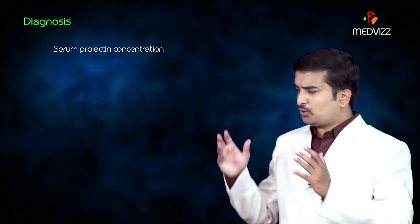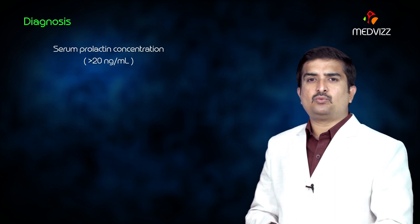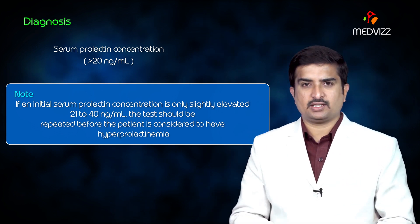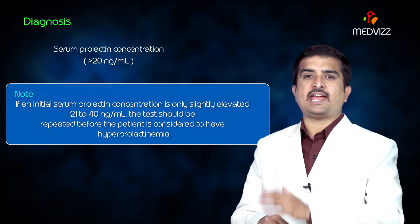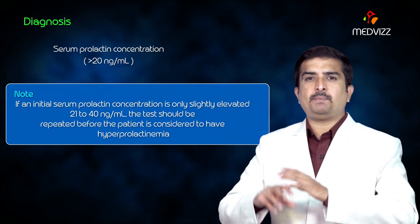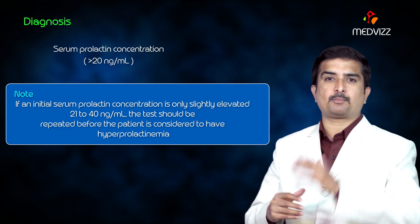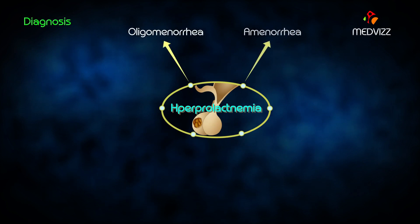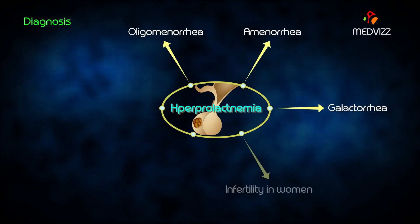The diagnosis of hyperprolactinemia is made by serum prolactin concentration well above the normal range, which is greater than 20 nanograms per ml. If an initial serum prolactin concentration is only slightly elevated — that is, 21 to 40 nanograms per ml — the test should be repeated before the patient is considered to have hyperprolactinemia. Hyperprolactinemia is a potential cause of oligomenorrhea, amenorrhea, galactorrhea, and infertility in women.